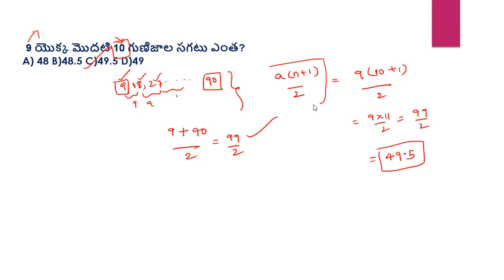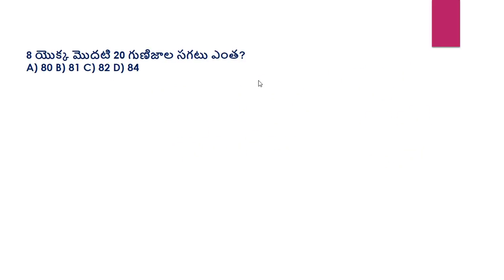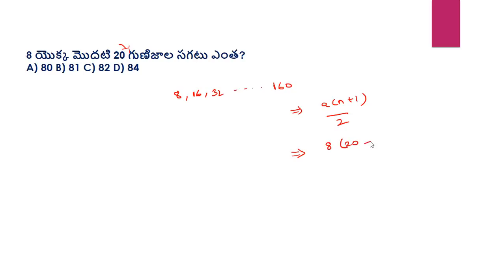If you want to use a formula, you can use a simple method: first plus last divided by 2, which equals 85. Next question: the formula is a into n plus 1 divided by 2. So a into n plus 1 divided by 2 equals 8 into 21 divided by 2. The answer is C.